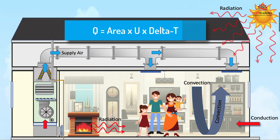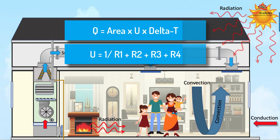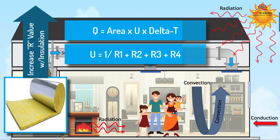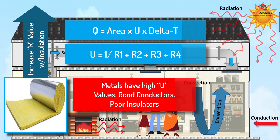The U-value is the inverse of the total resistance of the wall or roof assembly. The higher the R-value, the less the rate of heat transfer. This is how insulation reduces the heat transfer rate, while metals are highly conductive materials and easily move heat through them.